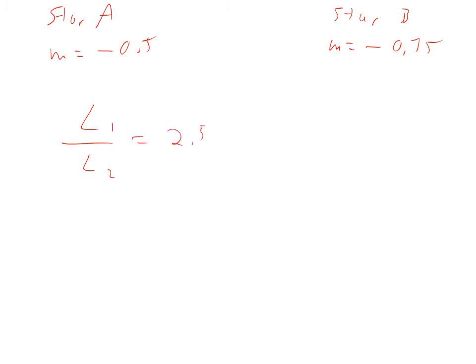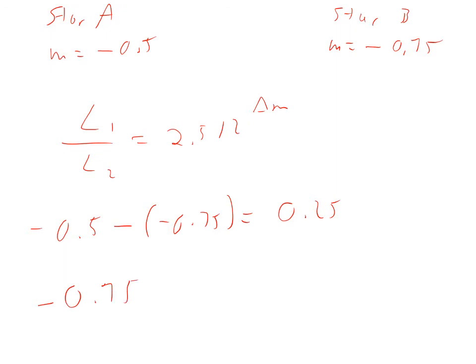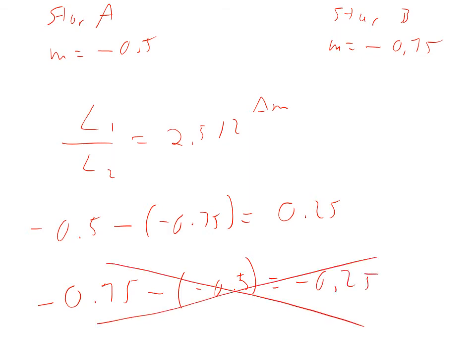I need to find the difference in those two magnitudes. I can do negative 0.5 minus negative 0.75, and the answer is 0.25. I could have done negative 0.75 minus negative 0.5, but the answer would be minus 0.25 — that's wrong. You have to have a positive exponent. So this is 2.512 raised to the 0.25 power.